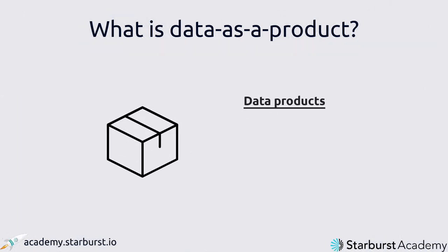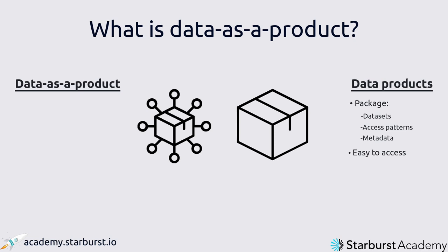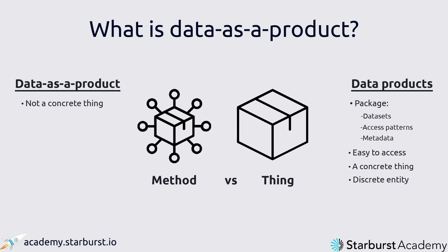You already know that data products package data sets with access patterns and metadata in a way that makes them easier to access for non-technical users. But what's the relationship between these data products and data as a product? To understand the relationship between the two, an important distinction has to be drawn between a thing and the method that creates that thing. Data products are things — specific packages of curated data combined with the necessary access controls and metadata needed to interact with that data as a discrete entity in a useful and accessible way. In contrast, data as a product is not a thing at all.